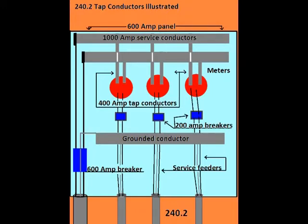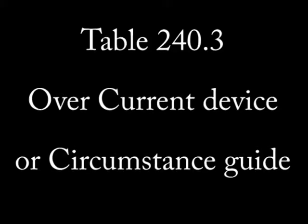If a fault should occur that exceeds 200 amps, the tap conductors will be protected by the 200 amp sub-panel breaker and the main 600 amp breaker will continue to supply the other services.